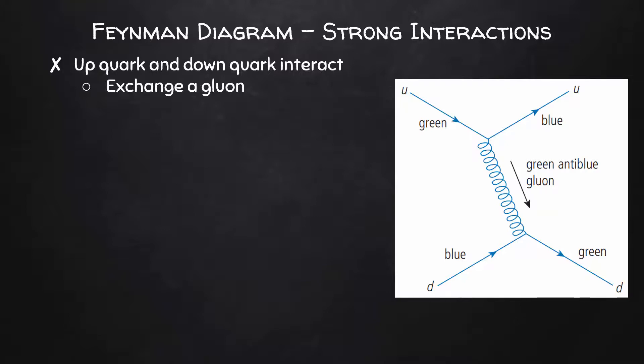What I really want to focus on here are all the colors. So we have a green up quark entering the interaction and a blue down quark entering the interaction. The gluon carries some color from the up quark to the down quark which results in both of them changing color. However, in this entire interaction, color has to be conserved.